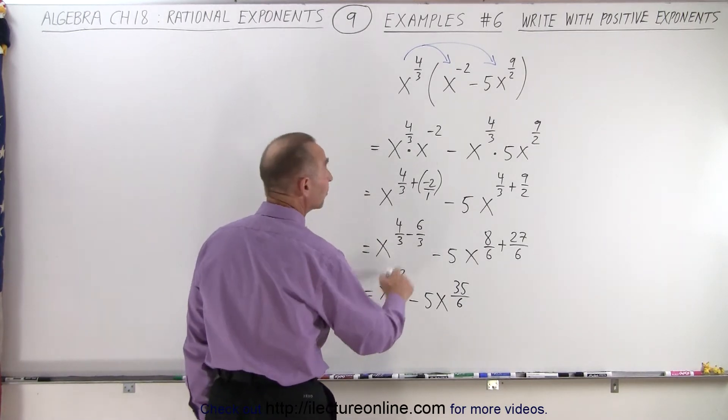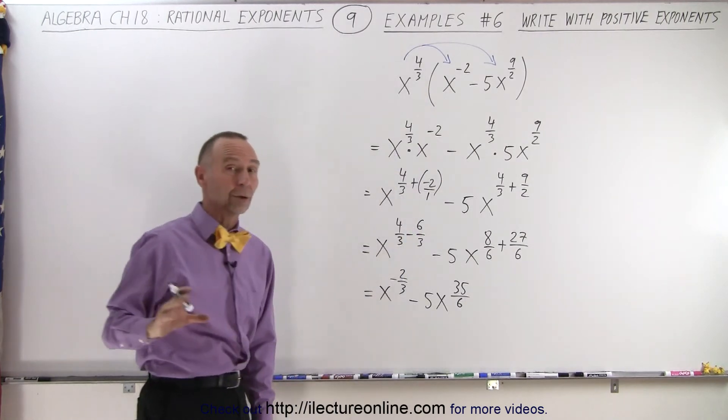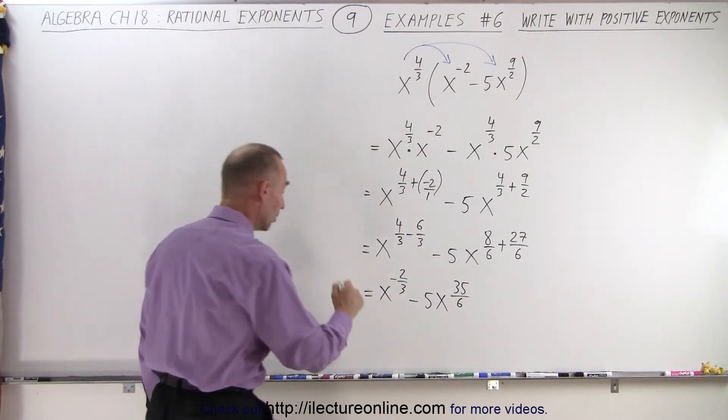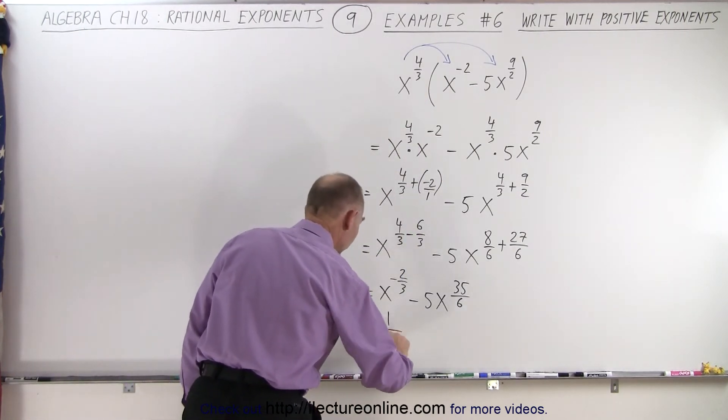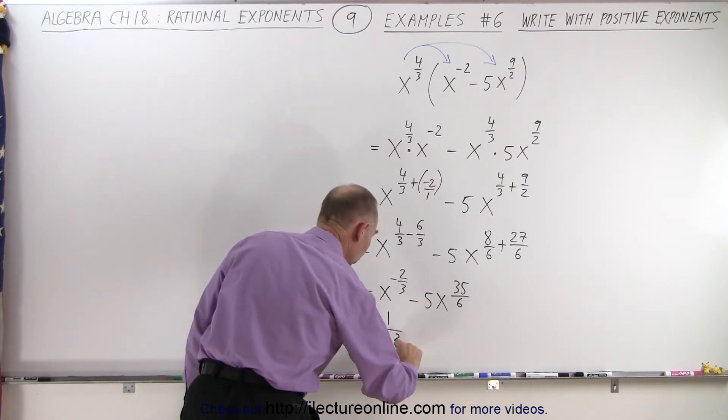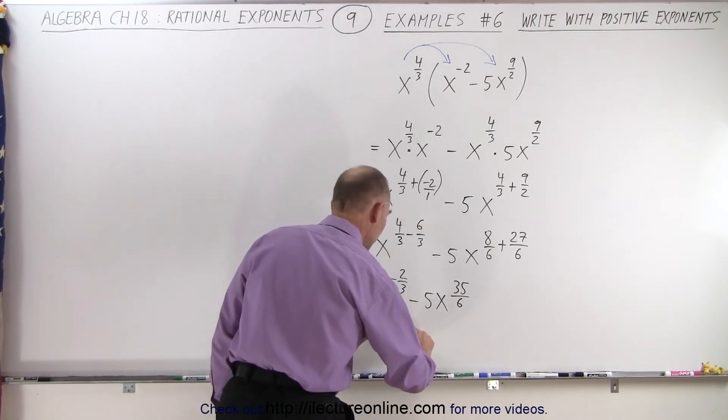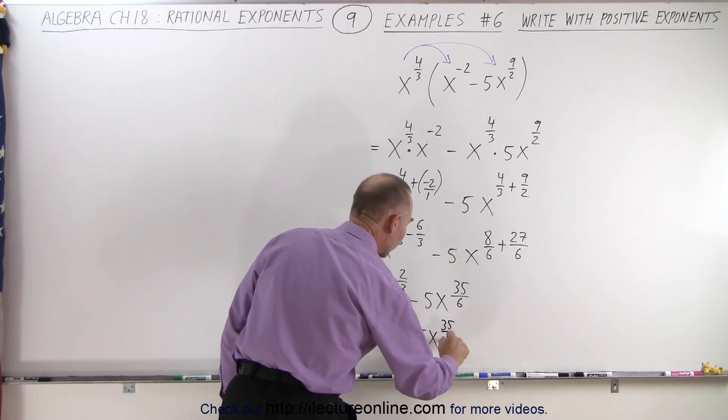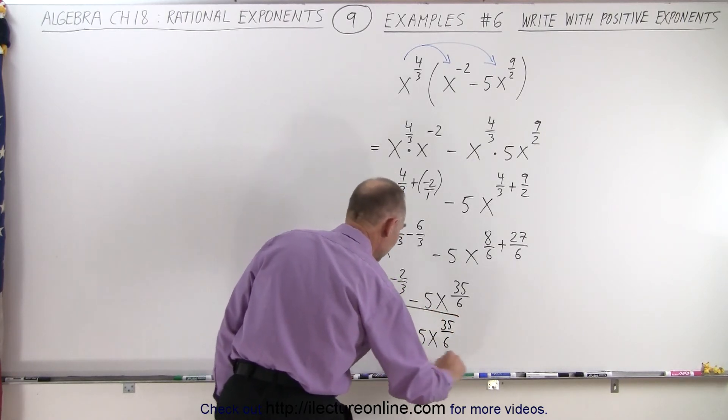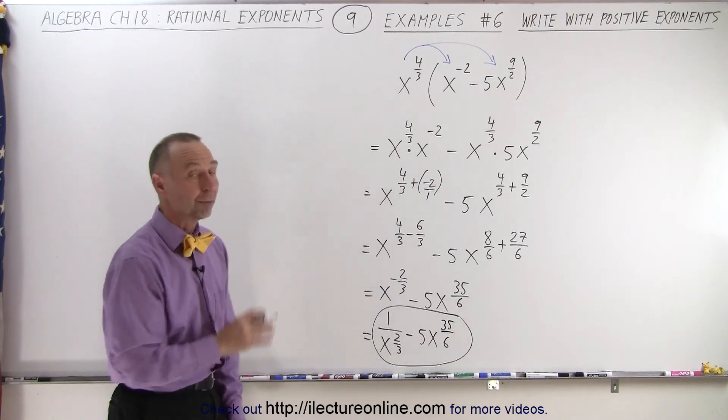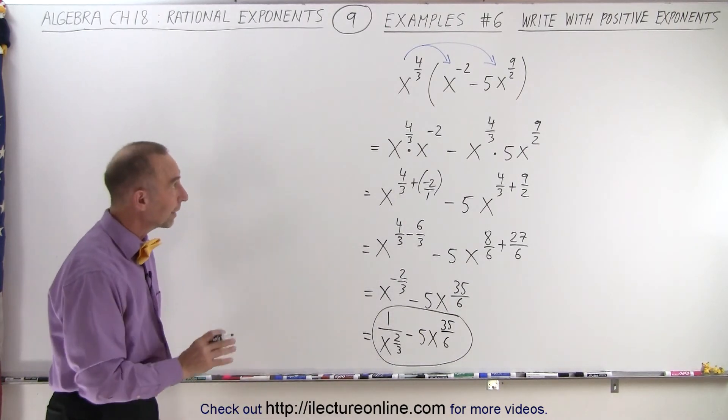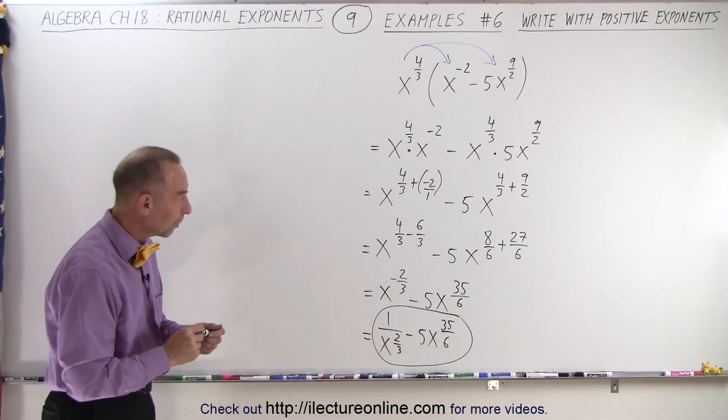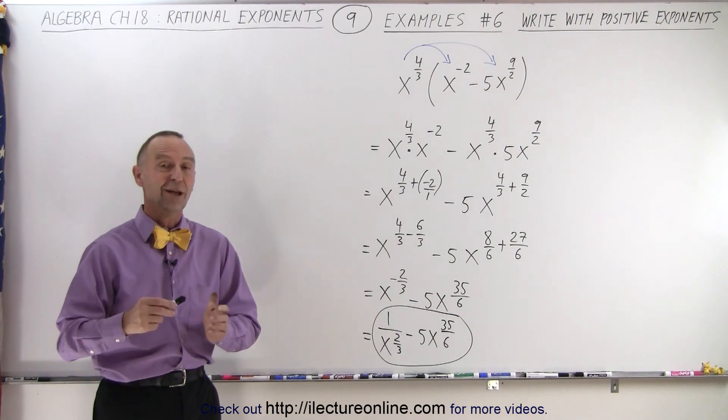But this has a negative exponent, and we're instructed to write only positive exponents. So we'll bring it to the denominator. This is 1/x^(2/3). And that would be minus 5x^(35/6). That would be the final format of our original problem, all worked out, multiplied out, and written with positive exponents only. And that is how it's done.